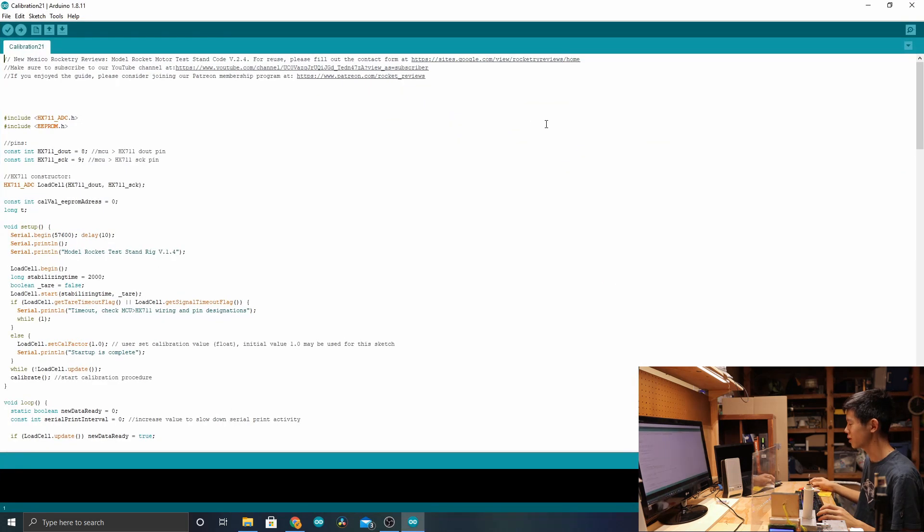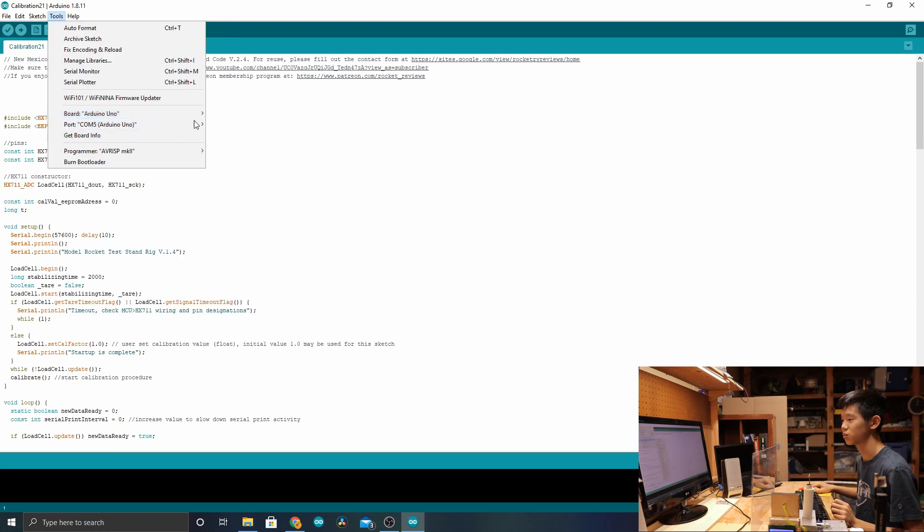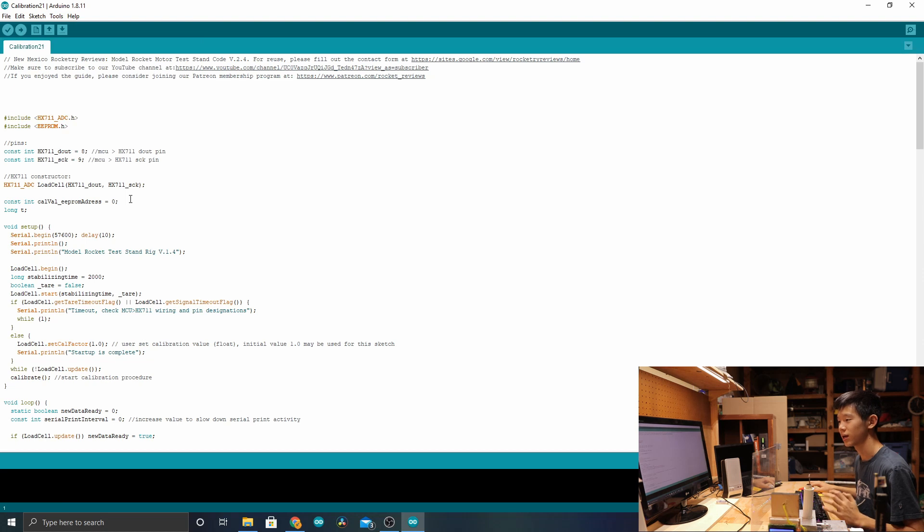Now that that's open, plug in your Arduino using the cable provided into your device. Now go to tools and select your board as Arduino Uno and your serial port as the one that fits yours. Mine is COM5, yours might be COM4 or COM3. Now that that's up and going, select upload.